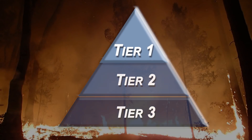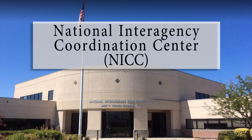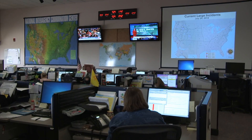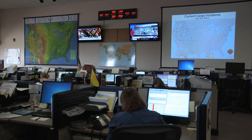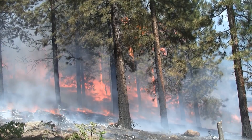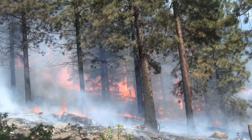Tier 1 is the National Interagency Coordination Center, or NIC. The NIC's principal mission is cost-effective and timely coordination of land management agency emergency response for wildland fire at the national level. The NIC positions resources across the country to meet existing and anticipated incident, preparedness, severity, wildland, and prescribed fire needs, regardless of geographic location or agency affiliation.